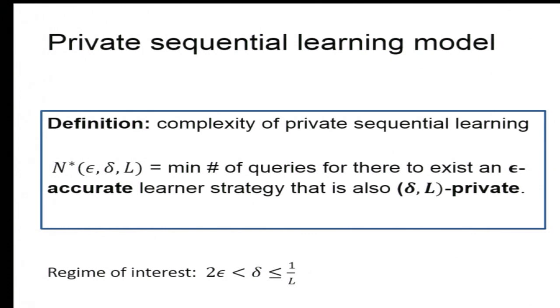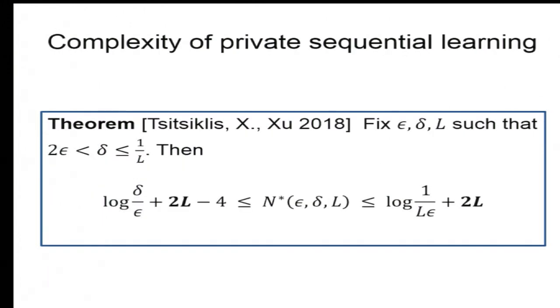So that's our main definition, complexity of private sequential learning. N star epsilon delta L is the minimal number of queries needed for there to exist a learner strategy that is both accurate and private. So how many questions do I need? And I want to point out we're looking at a regime where things are reasonable, so the learner wants to learn more accurately than the adversary. And that accuracy shouldn't be too big, because otherwise they can just randomly guess any point.